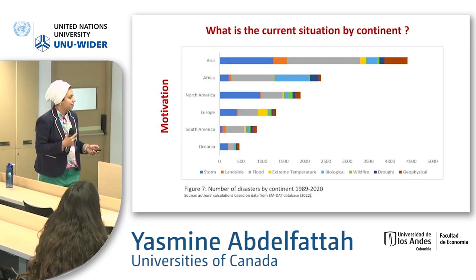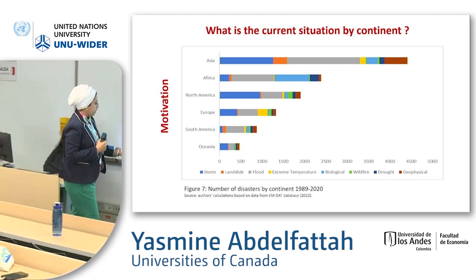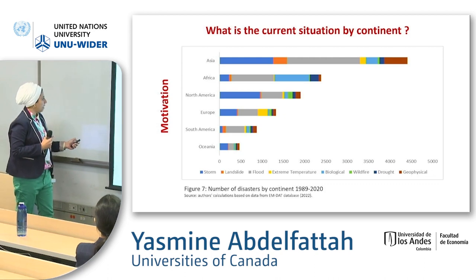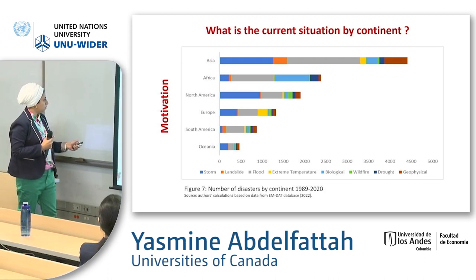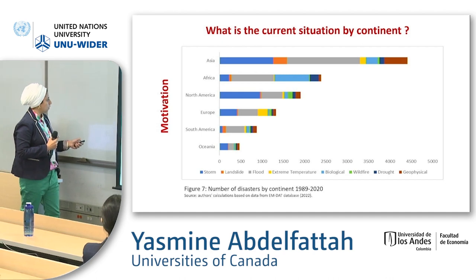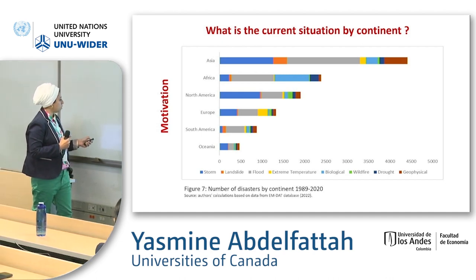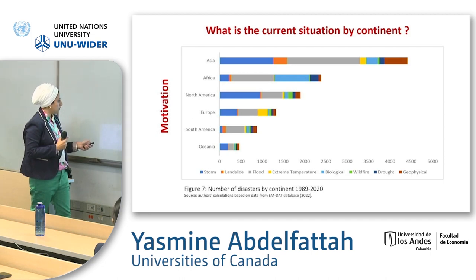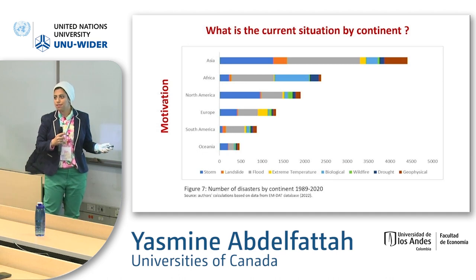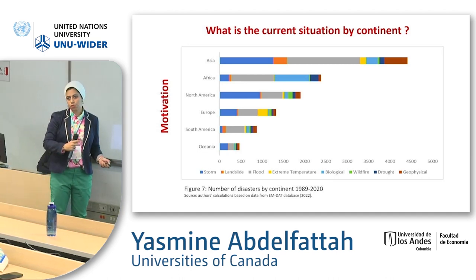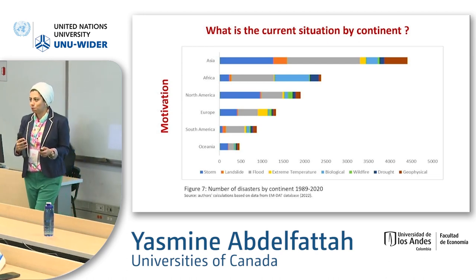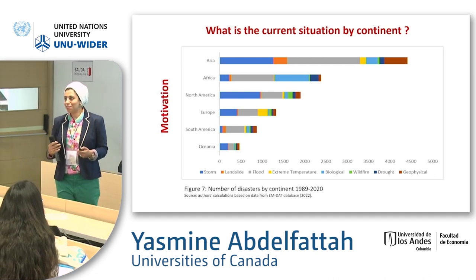Looking at the distribution of disasters by continent: Asia is really affected by storms, then landslides, then floods. Africa has storms, very few landslides, floods, and drought. Each continent has different needs — what suits Asia wouldn't suit Africa. This is important for COP27 and policymakers: they need to help each continent based on its specific needs.